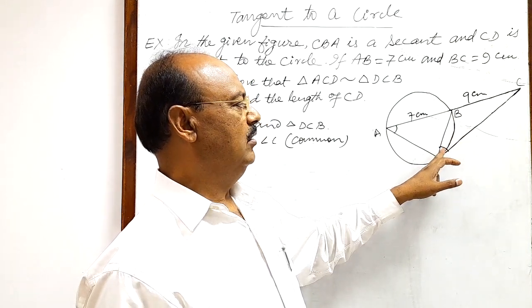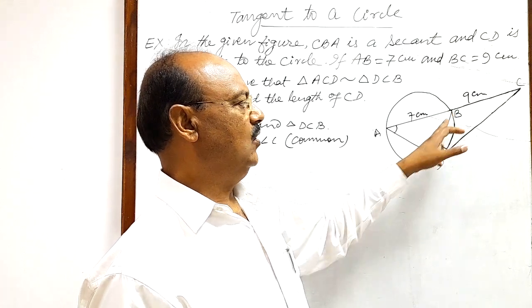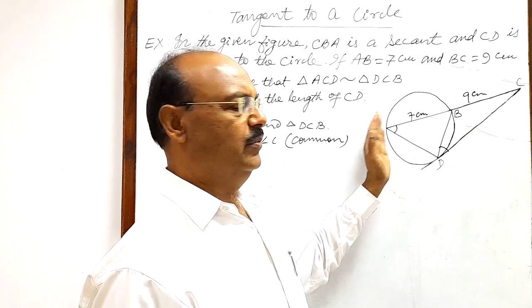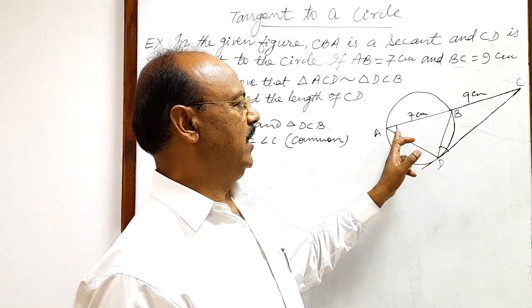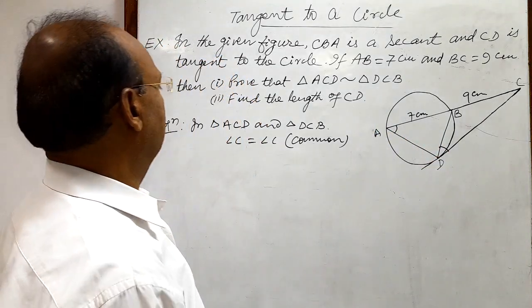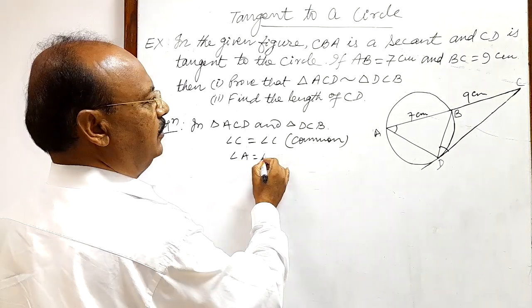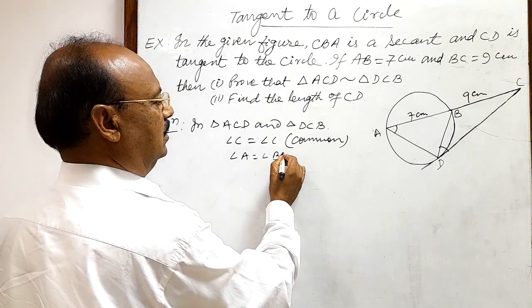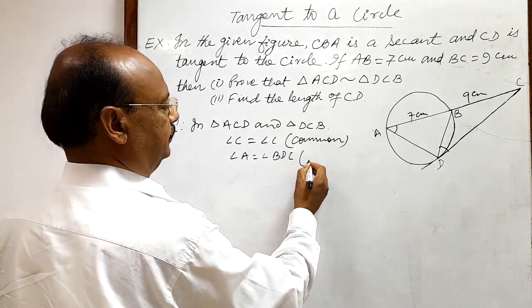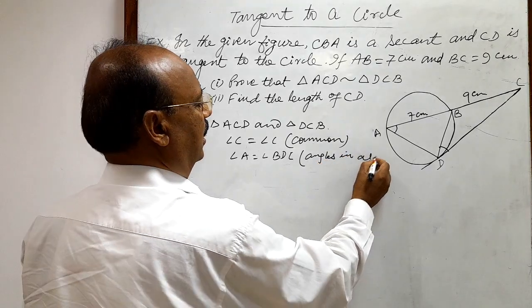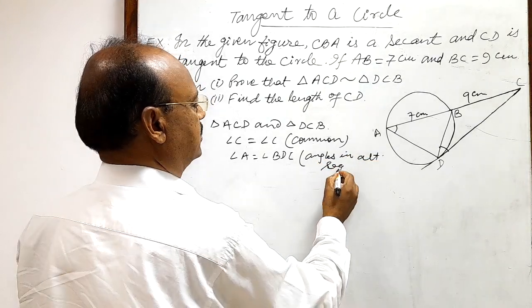This angle will be equal to the angle formed by the same chord BD at the circumference of the circle in alternate segment, in major segment. So these two angles are equal. So here we can write that angle A is equal to angle BDC. Reason: these are the angles in alternate segment.